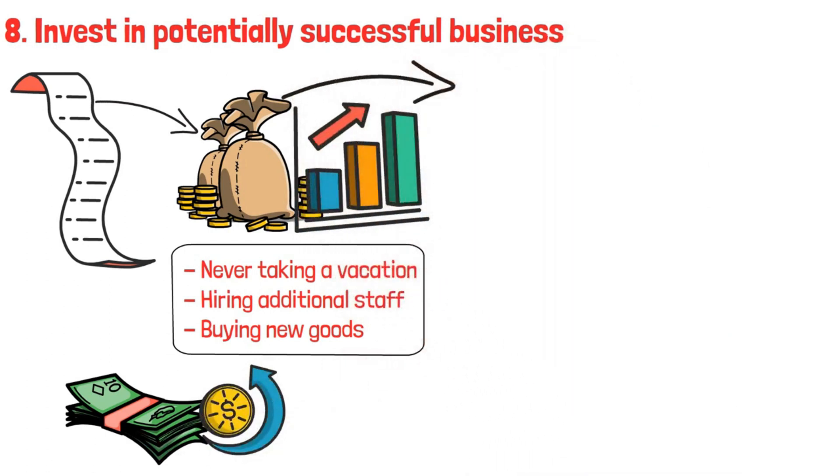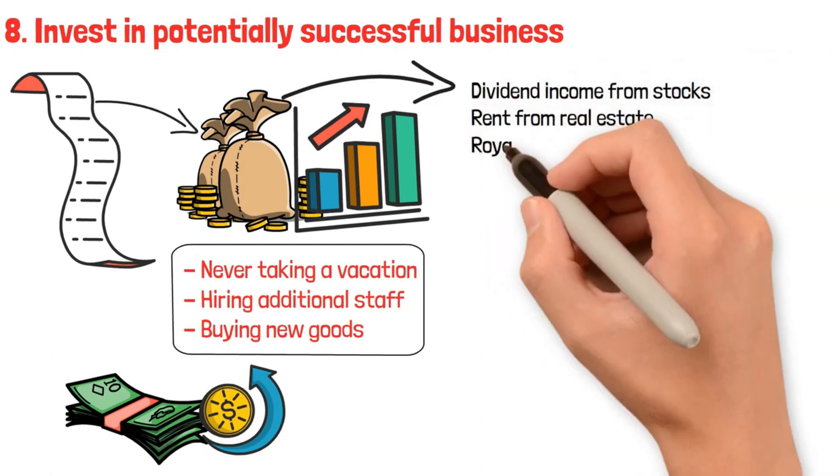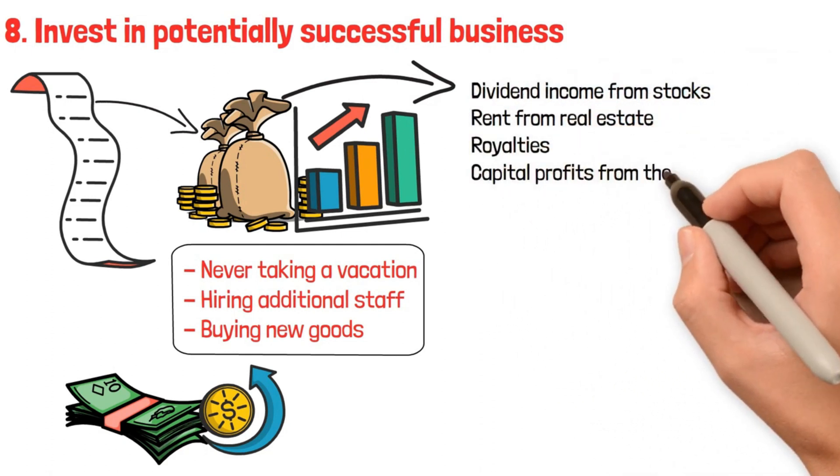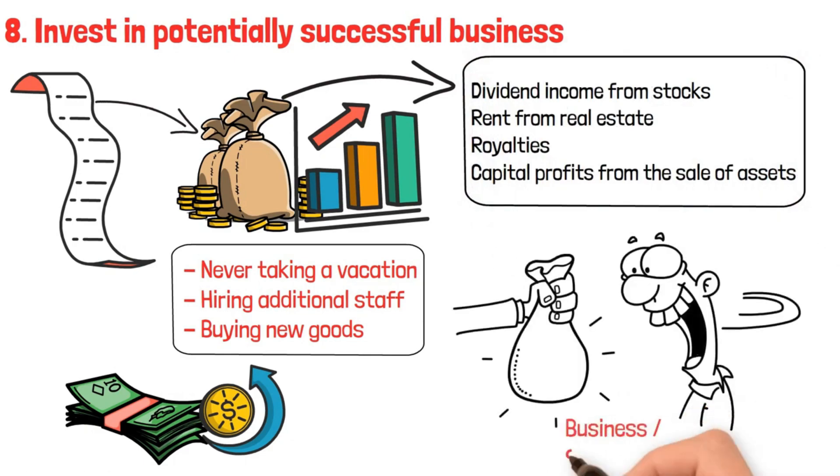The most prevalent sources of income are dividend income from stocks, rent from real estate, royalties, and capital profits from the sale of assets. It could be profit from business or even savings interest.